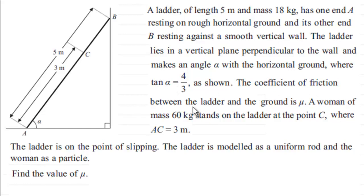The coefficient of friction between the ladder and the ground is mu and a woman of mass 60 kilograms stands on the ladder at the point C where AC is 3 meters. The ladder is on the point of slipping and the ladder is modeled as a uniform rod and the woman as a particle. And what we've got to do is find the value of the coefficient of friction mu.